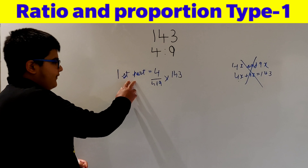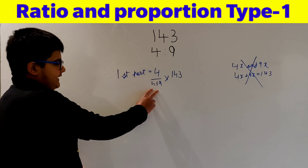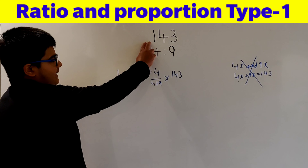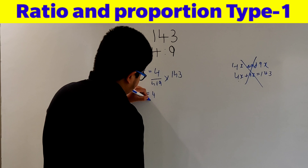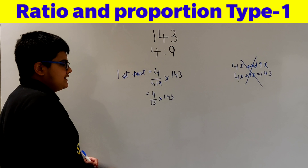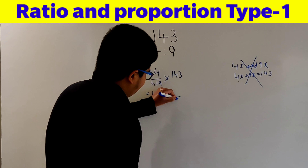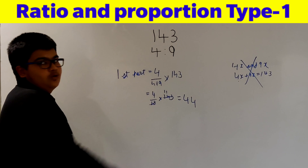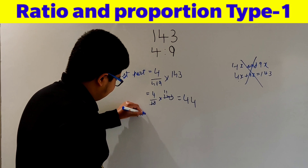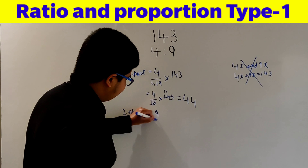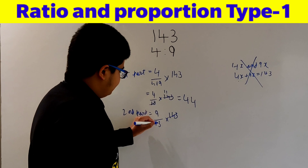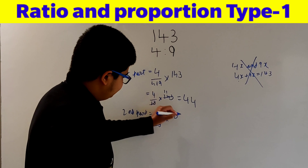For the first part, I took the first ratio, that is 4, divided by the sum of ratios, that is 4 plus 9 equals 13, and multiplied by the original number 143. So this gives us 4/13 × 143, which equals 44. Similarly, the second part will be the second ratio 9 upon 13, multiplied by 143, which gives us 99.